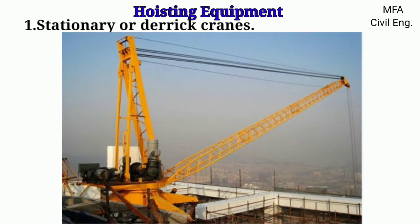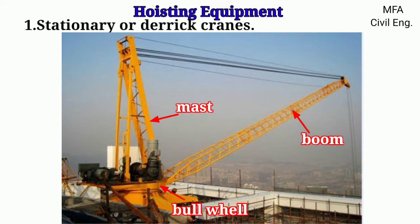A stationary or derrick crane consists of a mast, a boom, a bull wheel on which the boom rotates about the vertical axis, and a guy or supporting member. These cranes are either electrically operated, diesel operated, or diesel-electrically operated.